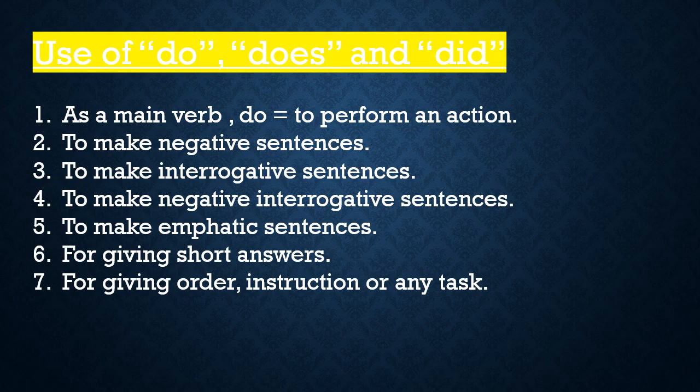In English grammar, do is an important topic and it creates confusion also, because do is used as a main verb as well as as an auxiliary verb or helping verb. English grammar mein do ek important topic hai aur confusion bhi create karta hai, kyunki do as a main verb use hota hai aur as a helping verb ya auxiliary verb bhi use hota hai. Some uses of do, does and did are given here.